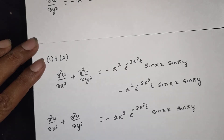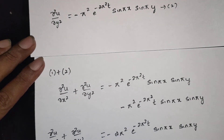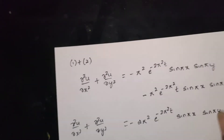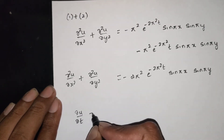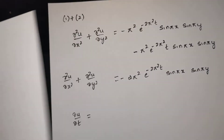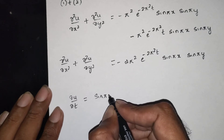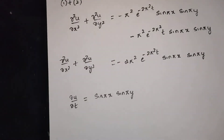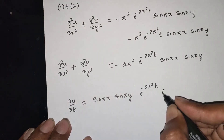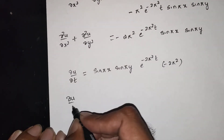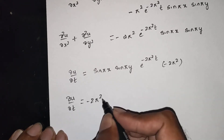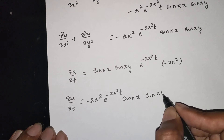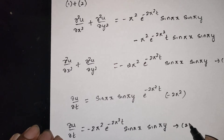This should equal dou u by dou t. Now finding dou u by dou t: differentiate u with respect to t. sin(pi x) and sin(pi y) are constant. e power minus 2pi squared t differentiates by multiplying by minus 2pi squared. So dou u by dou t is equal to minus 2pi squared e power minus 2pi squared t sin(pi x) sin(pi y). This is equation 1 and equation 2.